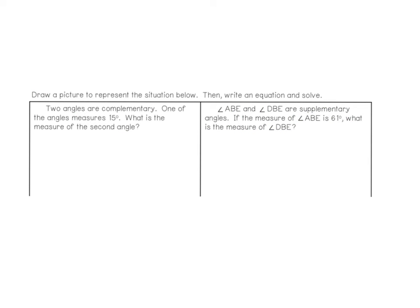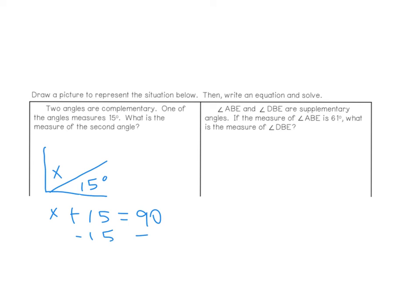For these ones, we're going to draw a picture and then solve it. The first one says two angles are complementary, and one of the angles measures 15. What is the measure of the second angle? A complementary angle is a right angle, so I draw a right angle with one side labeled 15 degrees. I set up X plus 15 equals 90, subtract 15 from both sides, and X equals 75. So the missing angle is 75 degrees.